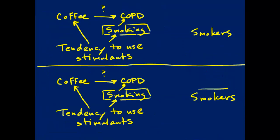Looking back at the picture from a previous video, this shows the analysis being done within each stratum of smoking — here are the smokers and here are the non-smokers. The way we are blocking the backdoor path between COPD and coffee is by taking out all of the variability in smoking, by limiting the analysis of the association between coffee and COPD to the stratum that only has smokers in it. The same applies to the non-smoker stratum — there are only non-smokers.